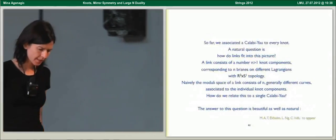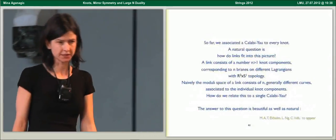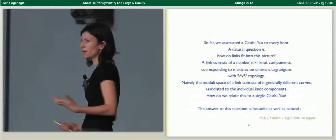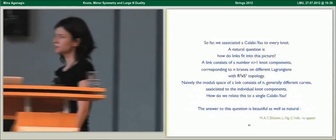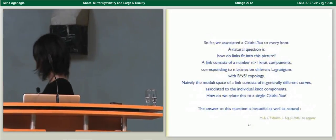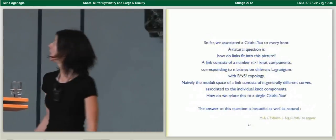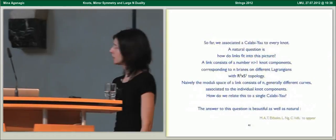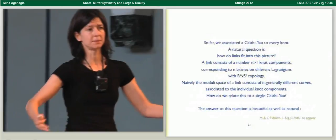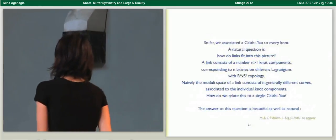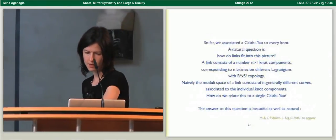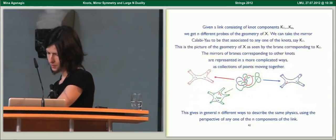So far we've studied only knots. A natural thing to puzzle is how do links fit in this picture. The reason that's a puzzle is that a link consists of some number of knot components corresponding to a number of different Lagrangians of topology R2 times S1. Naively, for a link with N knot components, you generally get N different curves. The moduli space is N-dimensional. How do you relate this to a single Calabi-Yau?